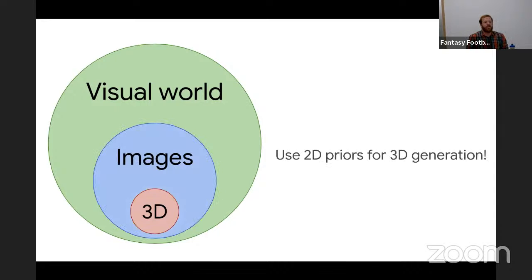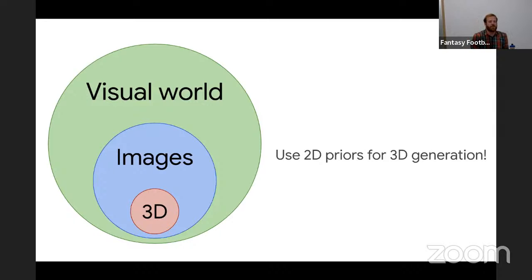To bridge this gap, we really need to find ways of relying on other kinds of datasets. Our work has focused on finding ways of using 2D priors trained on images for 3D generation. Unlike in 3D, we actually have billions of image-text pairs and large-scale image datasets. We have existing generative models like text-to-image diffusion that already work out of the box, and contrastive models that can embed images and text. So if we can find ways of using them for 3D generation, maybe we don't need 3D data at all.